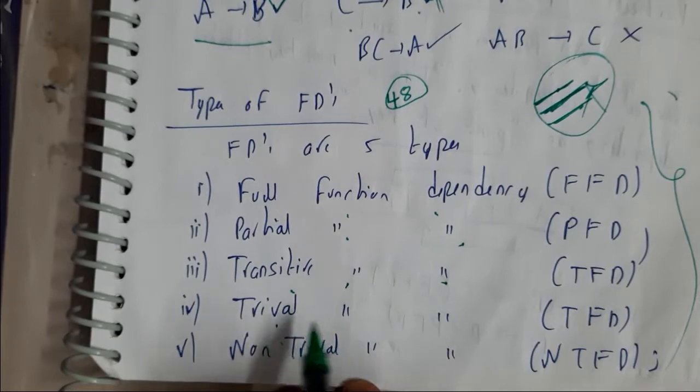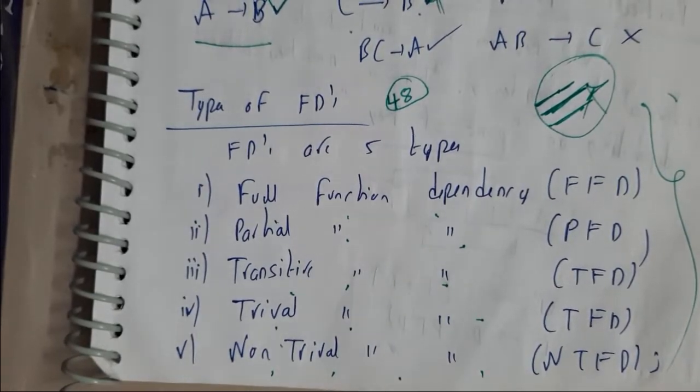Full functional dependency, partial functional dependency, transitive functional dependency, trivial functional dependency, and non-trivial functional dependency. These are all the possible five functional dependencies.